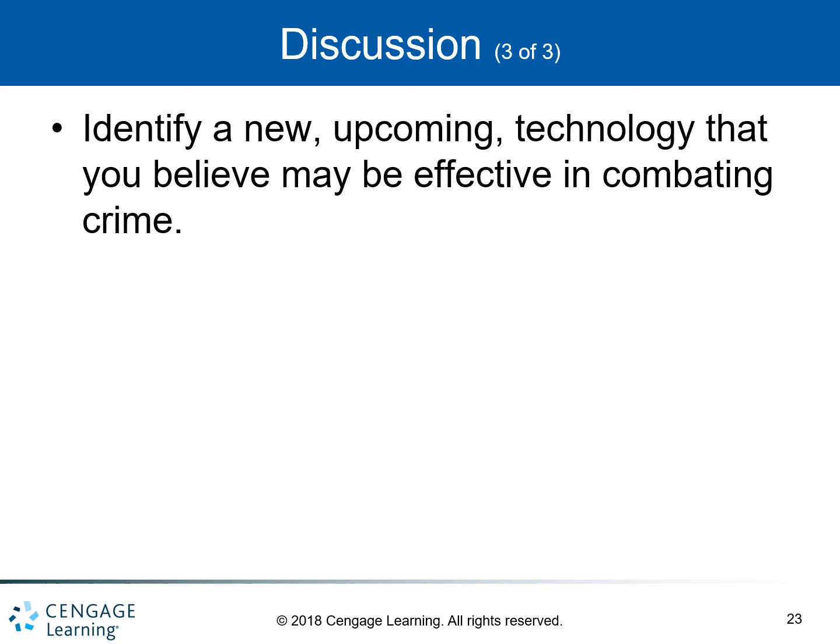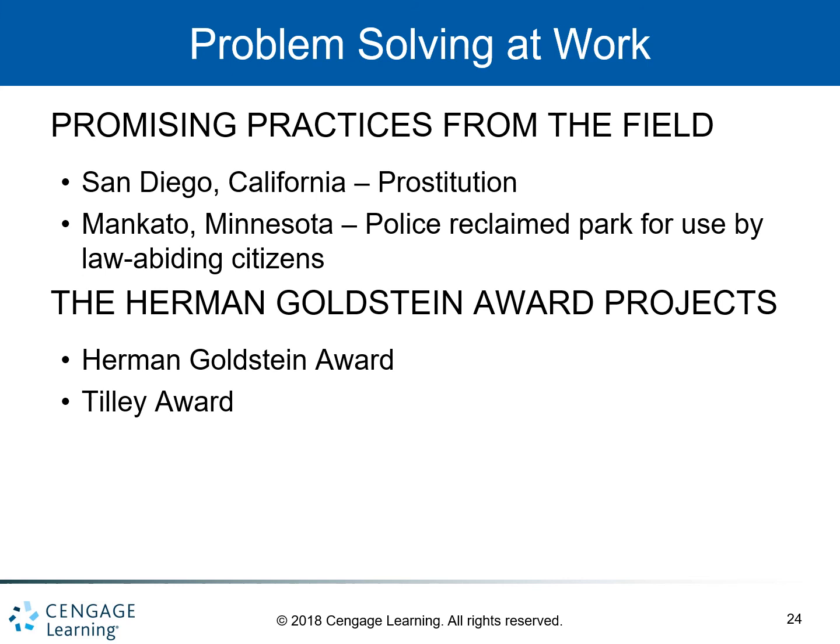Let's look at problem solving at work — some promising practices from the field. In Peoria, Illinois, police employed the Armadillo Project to combat nuisances, involving an old armored car used as a fortified surveillance vehicle when patrol cars were vandalized for attempting to monitor problem areas. In Charlotte-Mecklenburg, North Carolina, police combated commercial burglaries, particularly those in storage facilities, by working with companies to establish best safety practices and the use of disc locks.